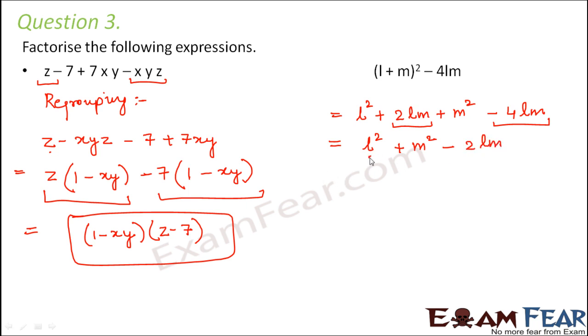Now what is this? This is in the form a² + b² - 2ab, which can be written as (a - b)². And this is the factor form.